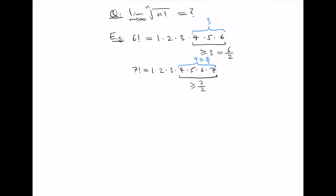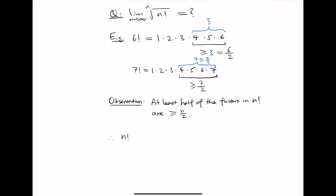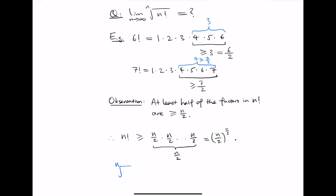This allows us to come to a key observation: at least half of the factors in n factorial are at least n/2. Therefore, n factorial is at least as big as (n/2)^(n/2). Taking the nth root of both sides gives the nth root of n factorial is at least (n/2)^(n/2) to the 1/n, which equals the square root of n/2.